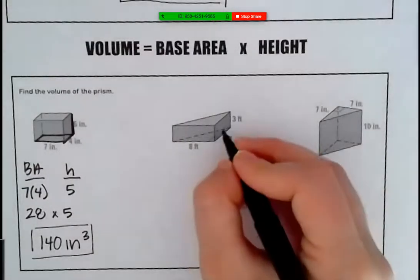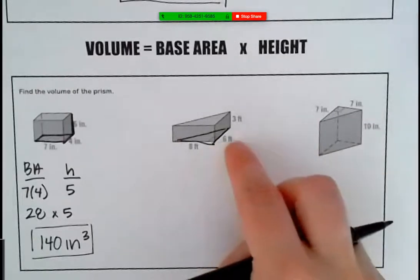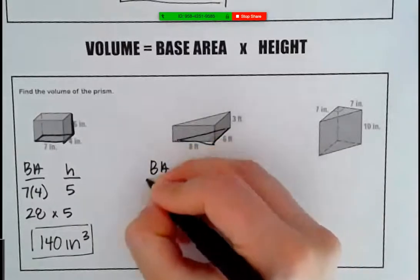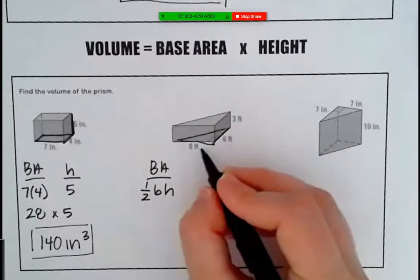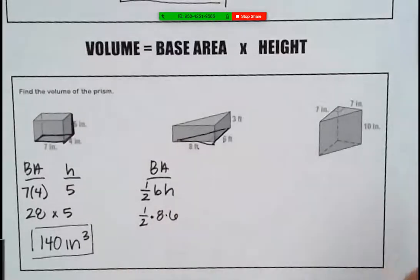What's our base shape on this guy over here? Triangle. It's a triangle, so remember when we find the area of a triangle, it's half base times height. You just forgot the half, right? Our base is eight and our height is six. So let's first figure out what half of eight times six is. What is eight times six? 48. Now we have to take 48 and divide it by two, which is 24.